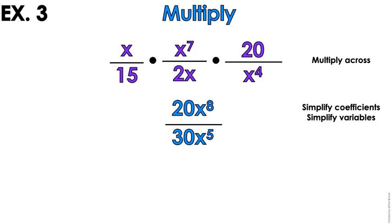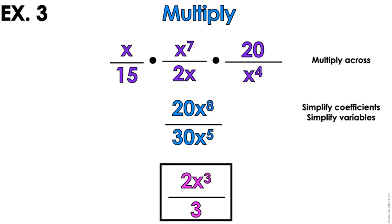Simplify the coefficients and simplify the variables. 20 over 30 is 2 thirds. x to the 8th over x to the 5th is x cubed on top. A little bit of the struggle bus with the words, but the math is mathic.